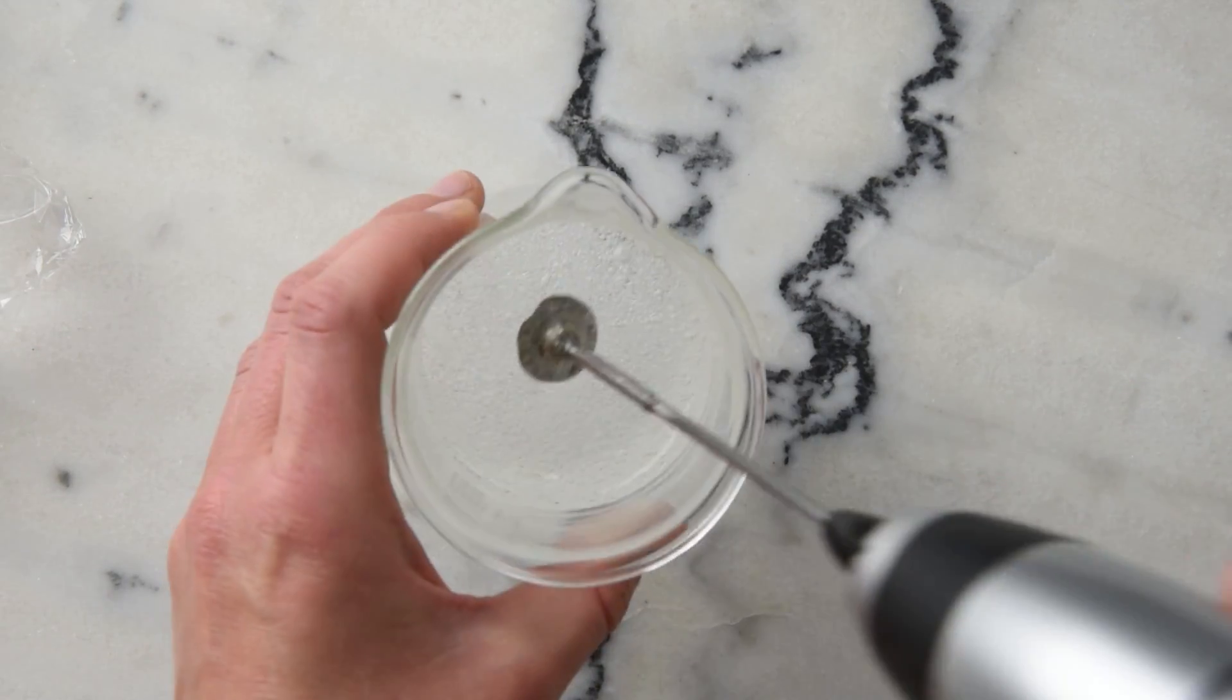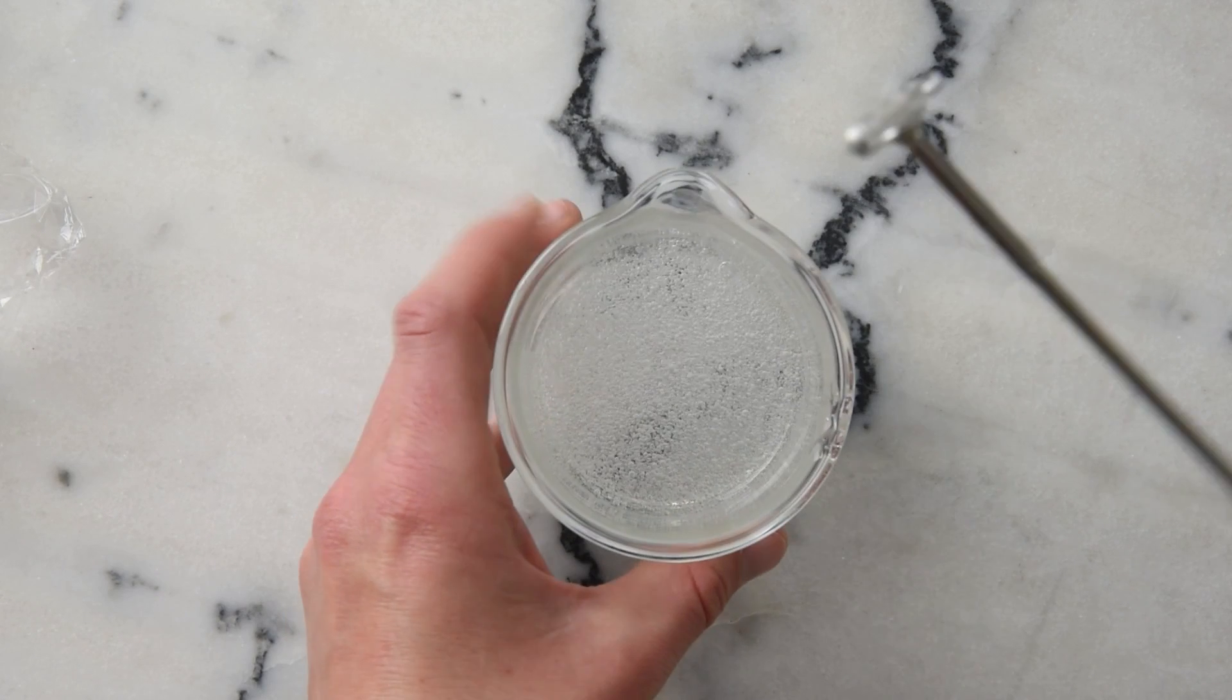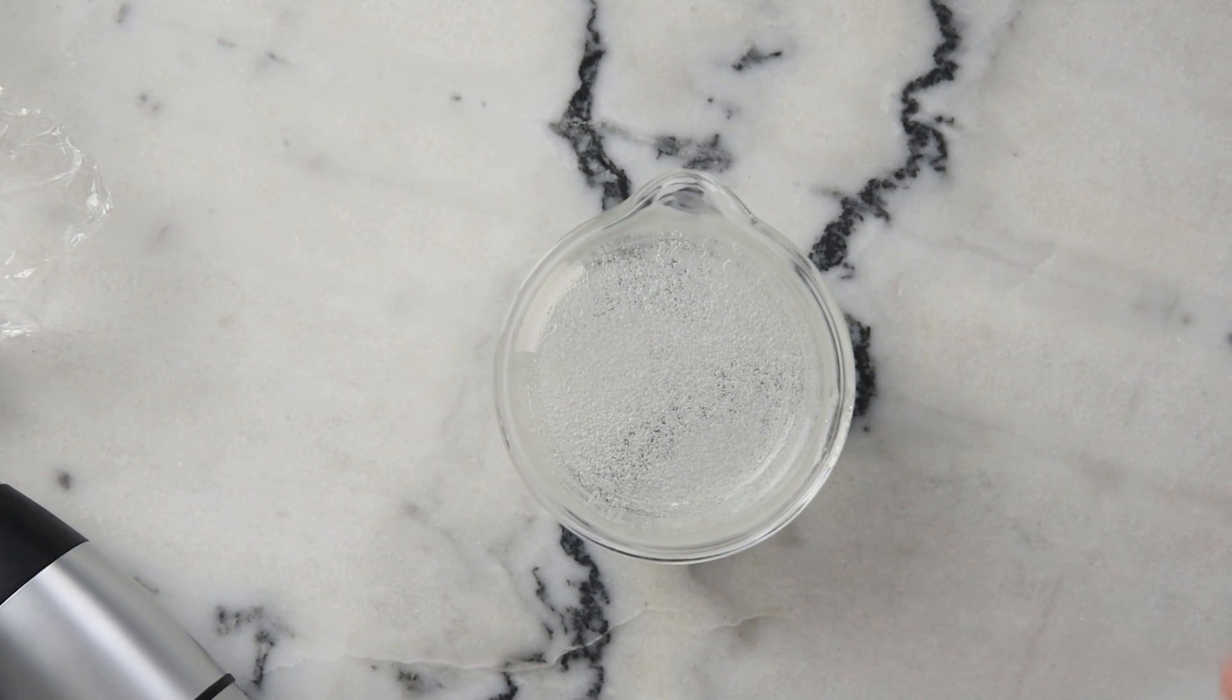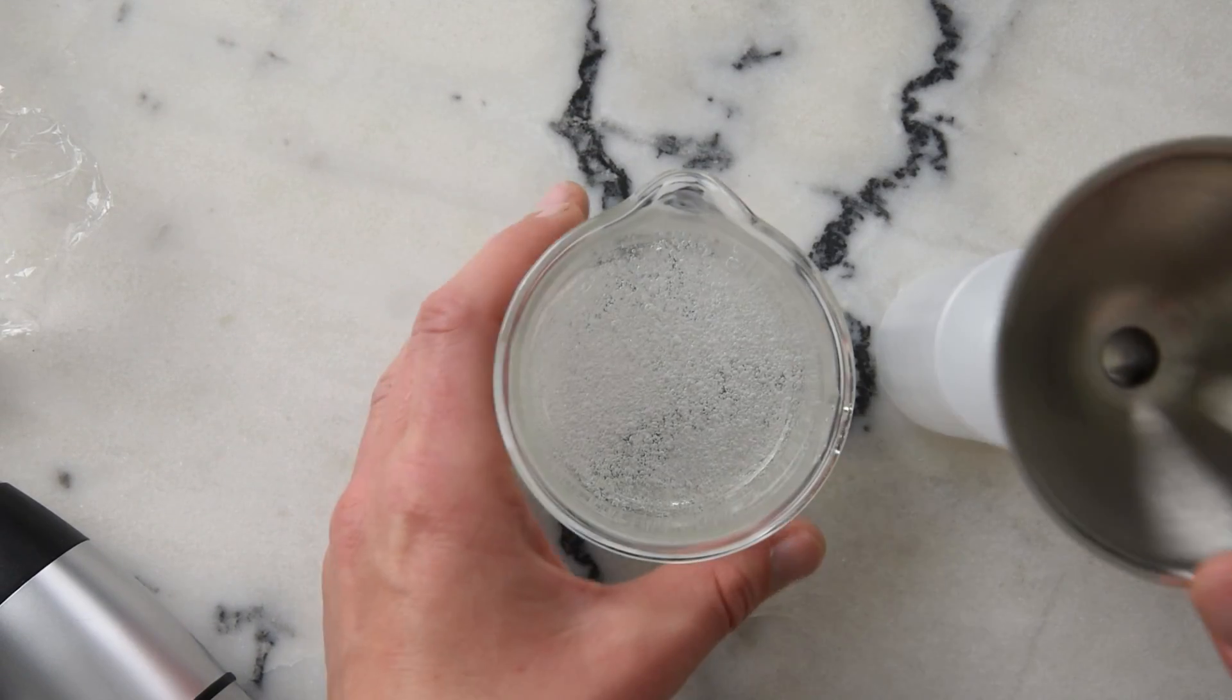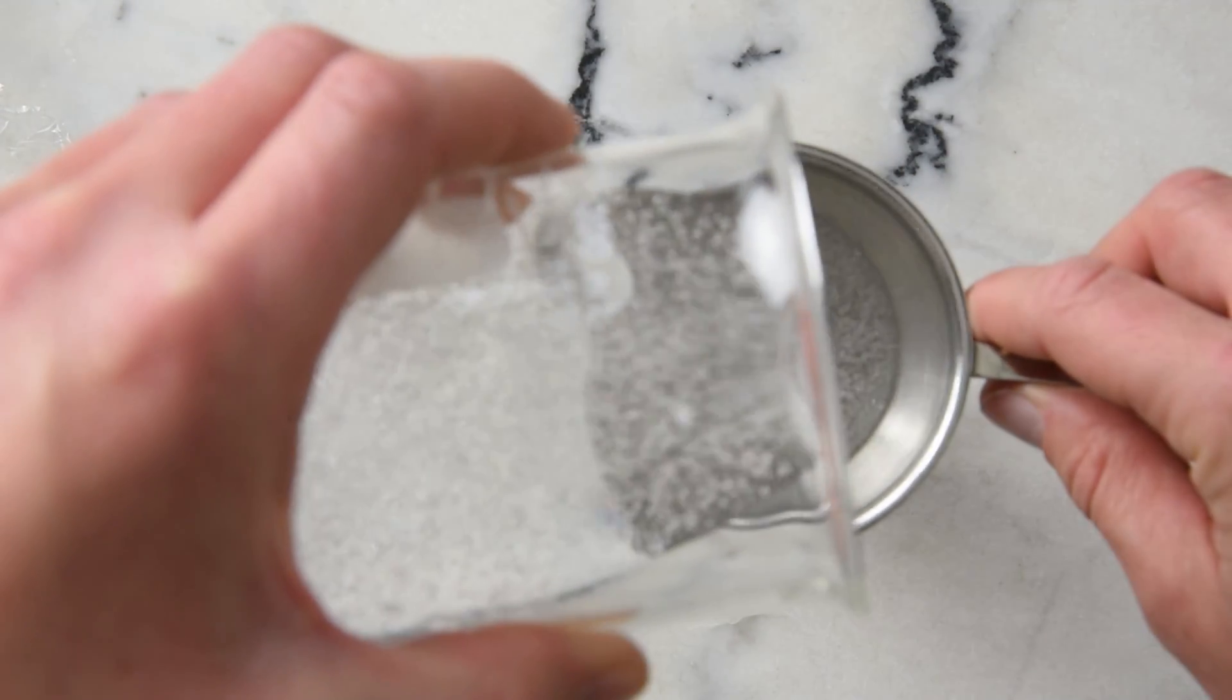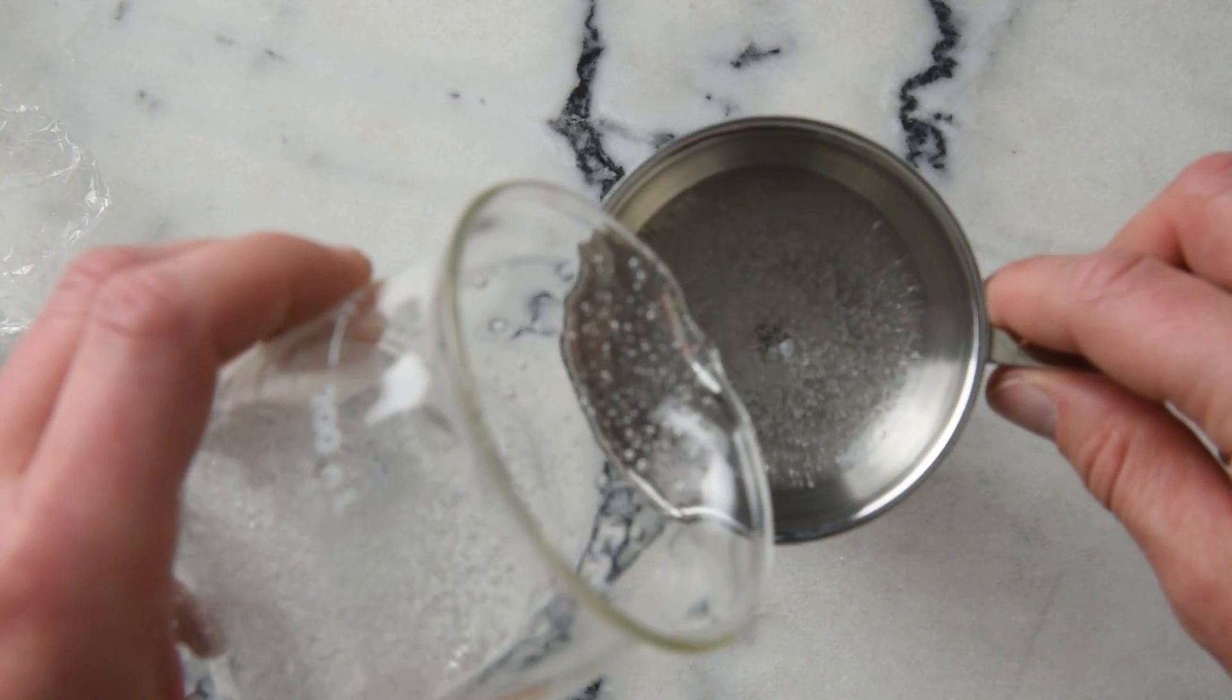You can see how viscous that is—it really traps quite a lot of air bubbles. Those will work their way out on their own, but now we can bottle it. I've got a 120-milliliter bottle here, and I'm going to use a funnel since this is rather viscous. Look at that, it's so cool, so viscous.